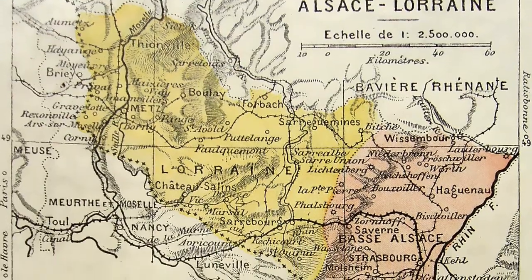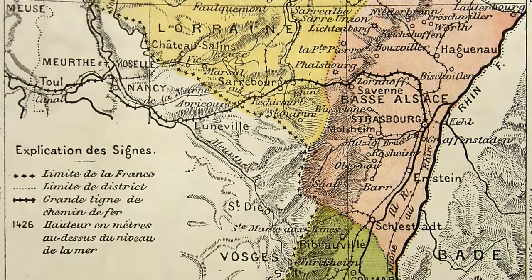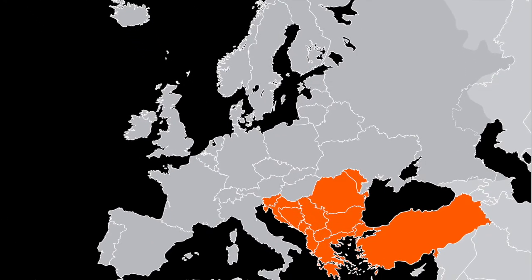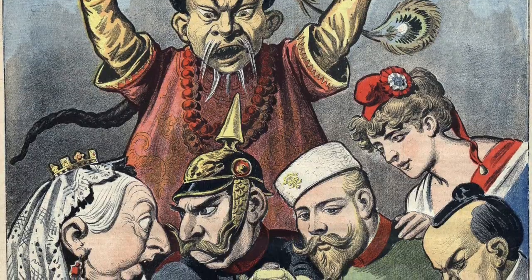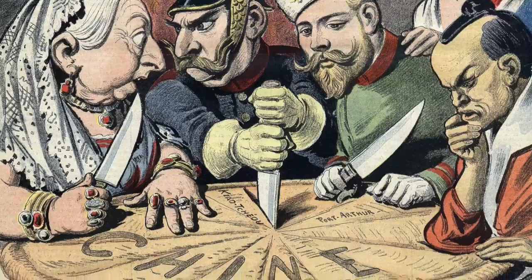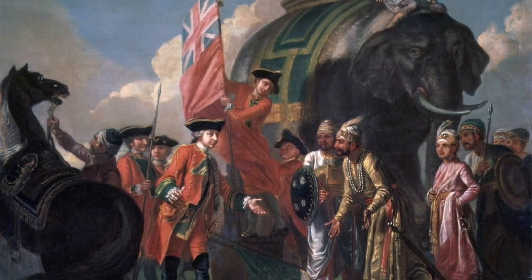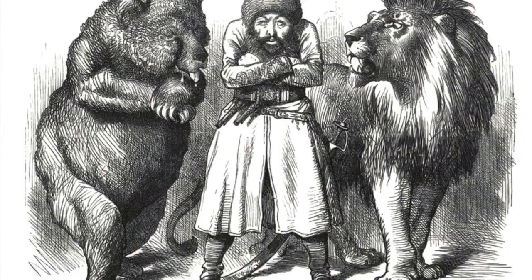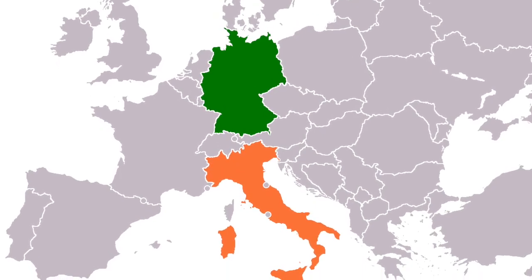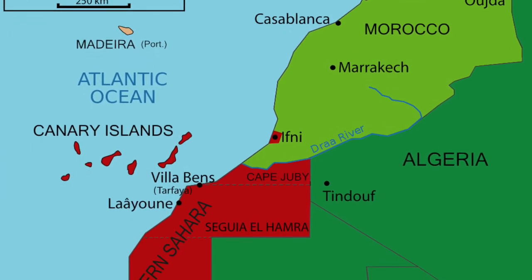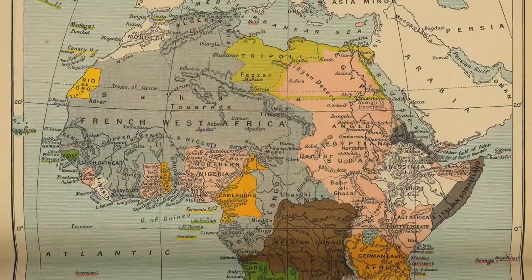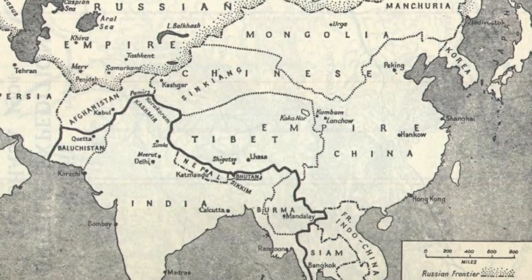Except for French designs on Alsace-Lorraine, there was no significant territorial claims among major powers in Western Europe. As the Ottoman Empire began to decline, however, the major powers began to eye potential gains in Southeast Europe. As imperialism gained force at the end of the 19th century, great power conflict was based on clashes in Africa and Asia. France and Britain were rivals in much of South Asia and Africa. Britain and Russia were involved in the Great Game in Central Asia and Persia. The two newly united countries of Italy and Germany had, along with France, designs in North Africa. And Britain garnered control over most of Egypt. A map of imperialism in Africa and Asia shows how pervasive European conquest was.